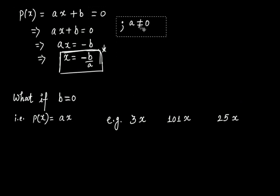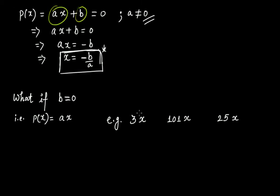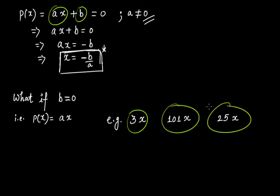Note that a cannot be equal to zero — that's a basic requirement. But what if b = 0? Then p(x) = ax. We have seen such examples where linear polynomials have no constant term, like 3x, 101x, and 25x — here the constant term b is equal to zero, but they are still linear polynomials.